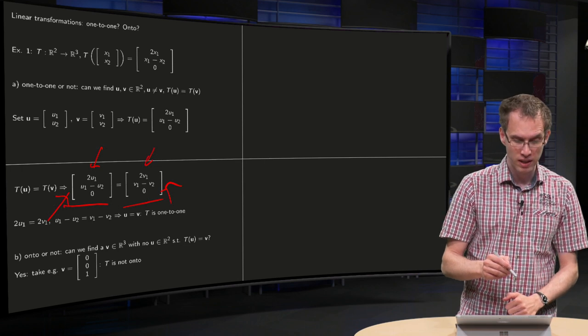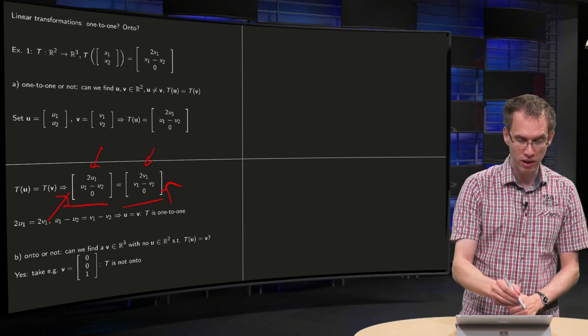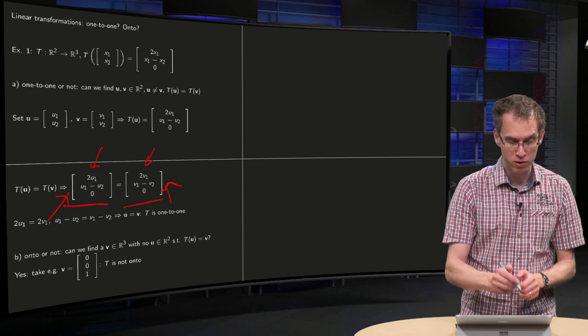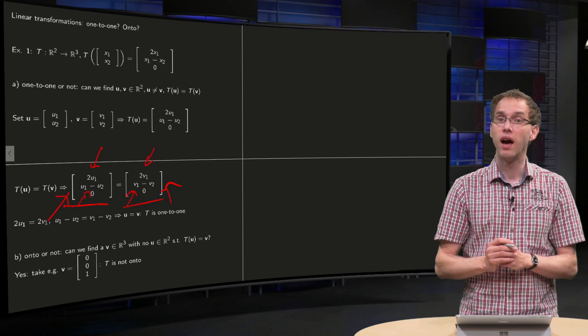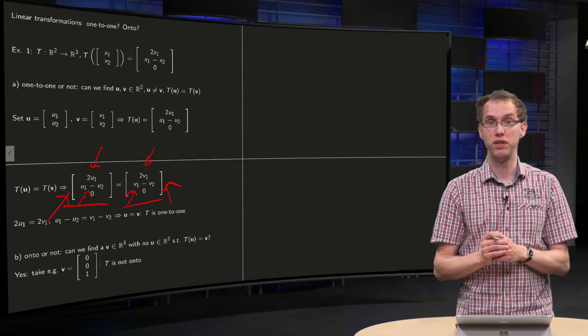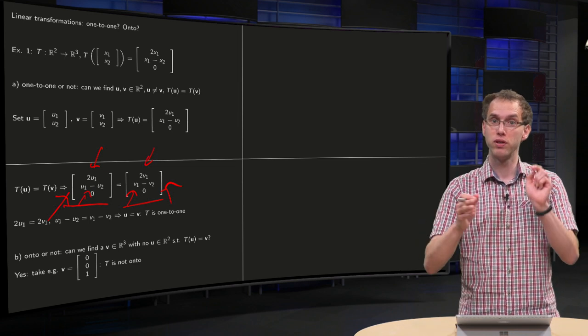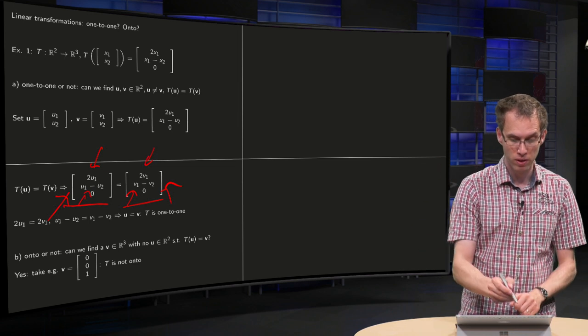If you substitute that in the second component, because u₁ is already equal to v₁, u₂ also has to be equal to v₂. So u₁ equals v₁, u₂ equals v₂, therefore the vector u equals v.